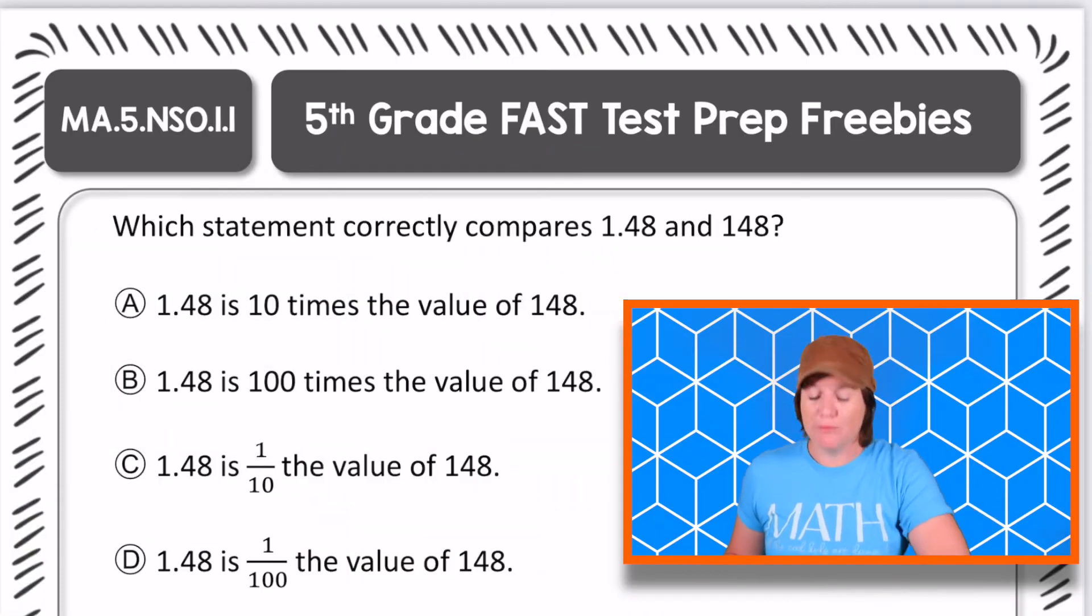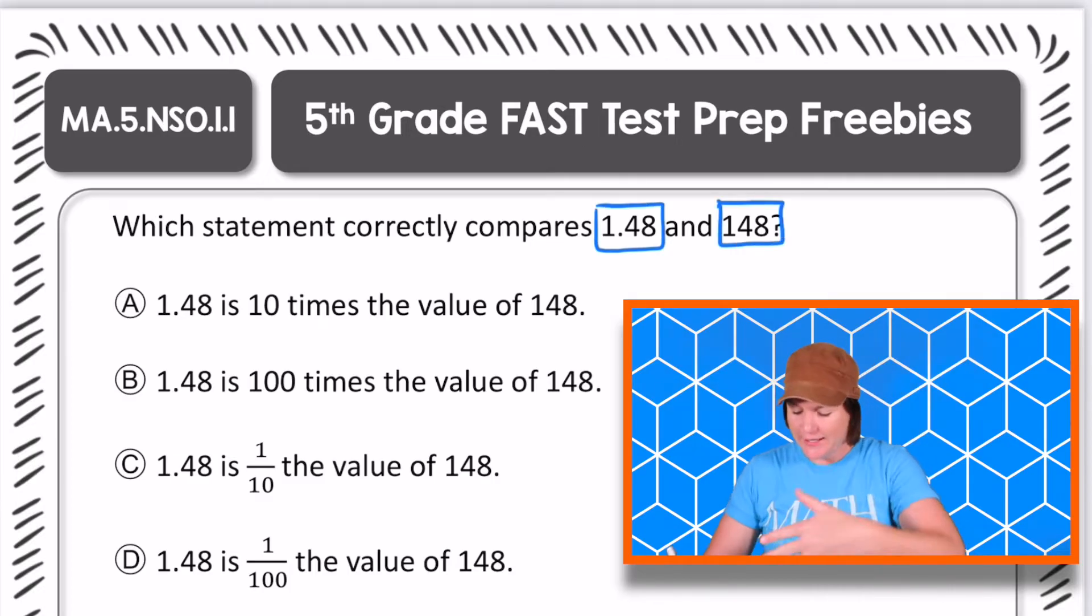All right, here is our fifth grade problem for today. It says, which statement correctly compares 1.48 and 148? So we have two numbers. We have three digits in each number, 1, 4, and 8, but we can see that the values are different.